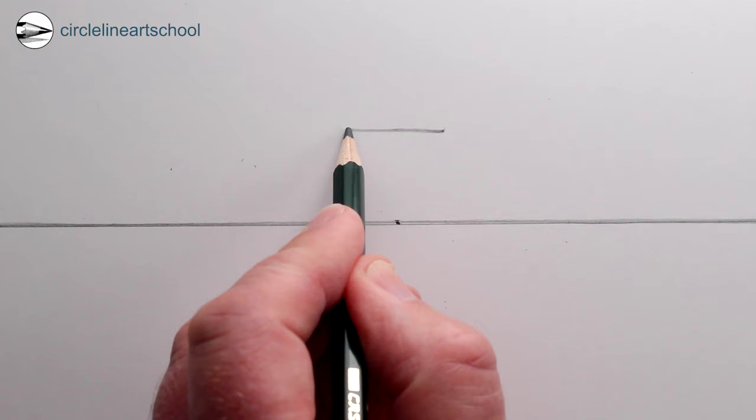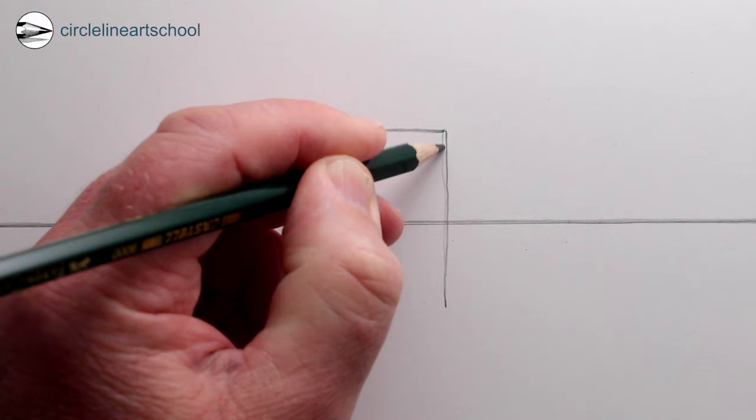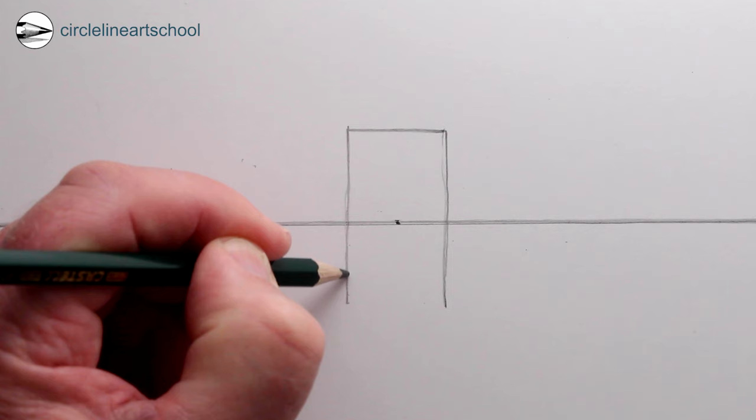Next we can draw a rectangle around the vanishing point, keeping the horizontal lines horizontal and parallel to the horizon line, and keeping the vertical lines vertical and parallel to the edge of the paper. So now we can just draw a baseline for the rectangle.